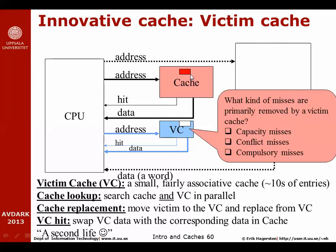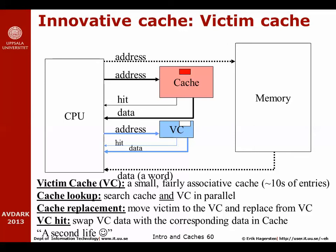What kind of misses are primarily removed by a victim cache? The answer is conflict misses. Cache lines that have conflicts can leverage the extra associativity of the victim cache to survive longer and potentially be reused before being thrown out again. The victim cache improves performance primarily by removing conflict misses. Of course it also makes the total cache capacity slightly larger, but that is just a marginal effect.